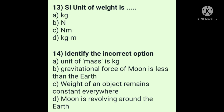Question 14: Weight of an object remains constant everywhere. This is an incorrect statement because mass remains constant everywhere, but weight depends on the value of g. So the statement that weight remains constant everywhere is incorrect.